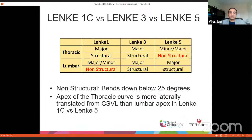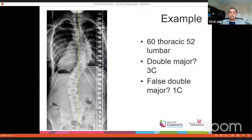For the most part, that definition has stood the test of time. In Lenke 1, the lumbar is non-structural; in Lenke 3 it is structural; in Lenke 5 the thoracic is non-structural. This is a 60-degree thoracic curve and 52-degree lumbar curve. The question is, is this a double major curve or a false double major curve — terminology used in King's classification many years ago?